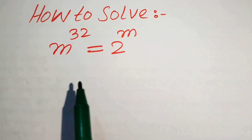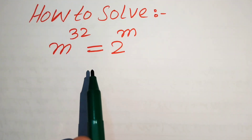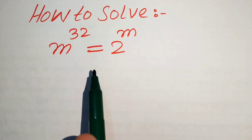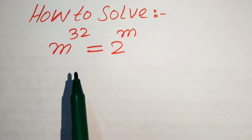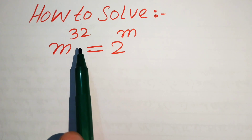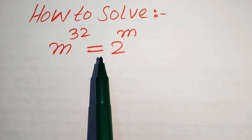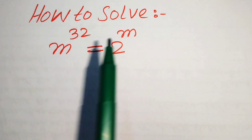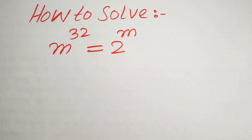Hello everyone. How to solve this problem: for the values of m if we have m to the power of 32 equals 2 to the power of m.